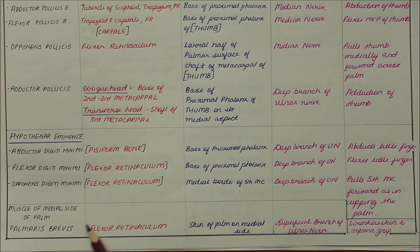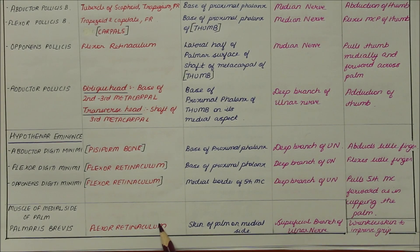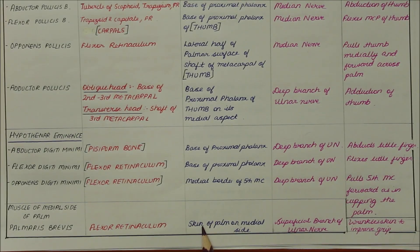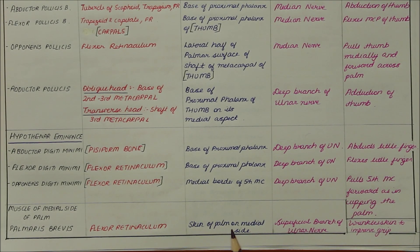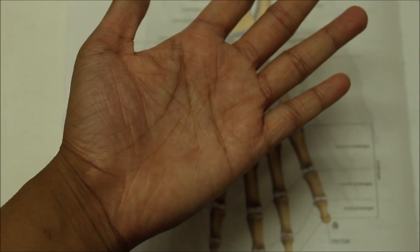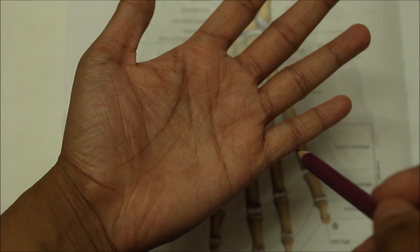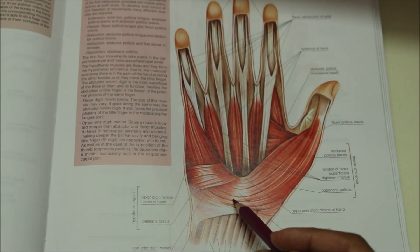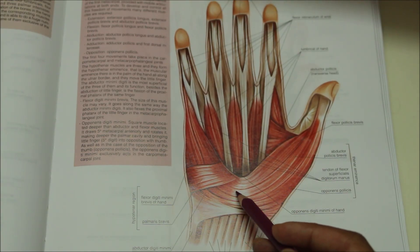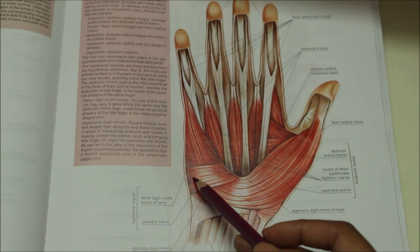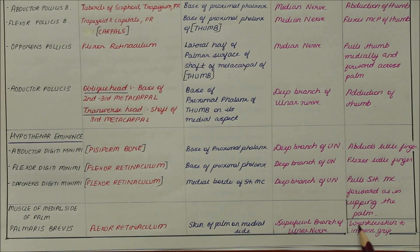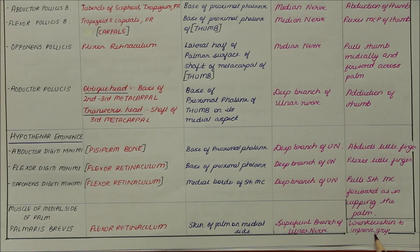Next we have the palmaris brevis. It originates from the flexor retinaculum and inserts into the skin of the palm on the medial side. It is supplied by the superficial branch of the ulnar nerve, and its action is that it wrinkles the skin to improve the grip.